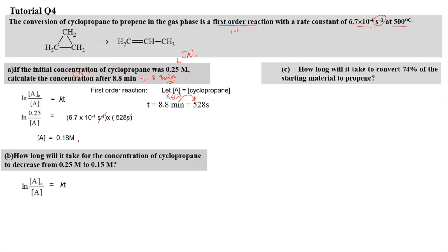For part B, how long will it take for the concentration of cyclopropane to decrease from 0.25 molar to 0.15 molar? We're going to use the same integrated rate law, where the initial concentration is 0.25 molar and the concentration after time T is 0.15 molar.